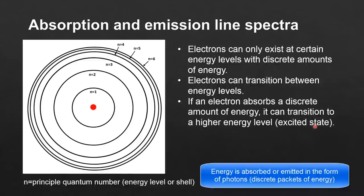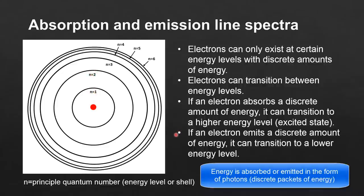If an electron absorbs a discrete amount of energy, it can transition to a higher energy level, which is called its excited state. For example, an electron can absorb an exact amount of energy and transition from n equals 1 to n equals 2. If an electron emits a discrete amount of energy, it can transition to a lower energy level — for example, from n equals 2 down to n equals 1.